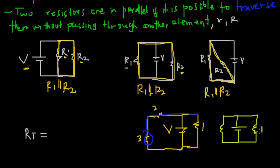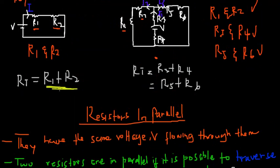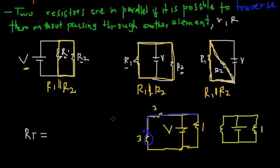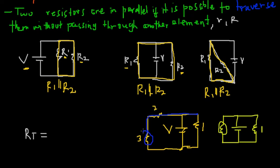After simplification, we have R1 and the combined value of R2 and R3 in series. We find the exact value of R2 and R3 in series by adding them. Once we add R2 and R3, the circuit is simplified into a two-resistor form. Then traversing through them confirms no other elements are encountered, and we can identify the parallel combination.